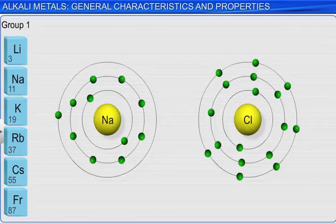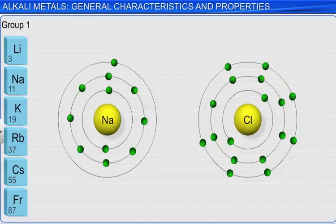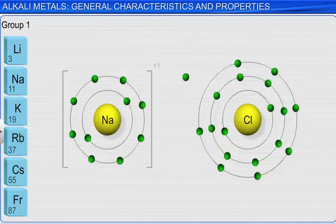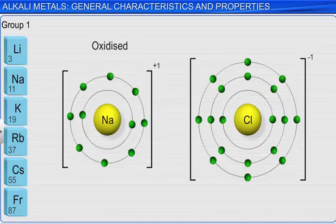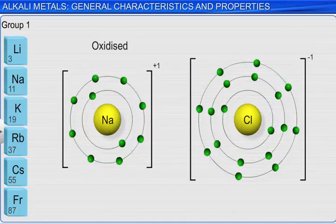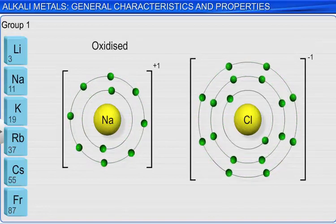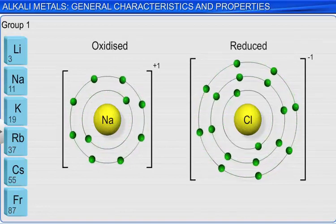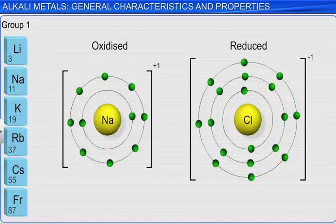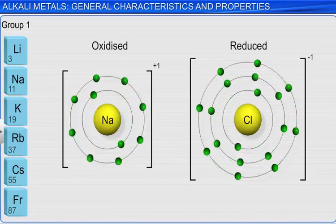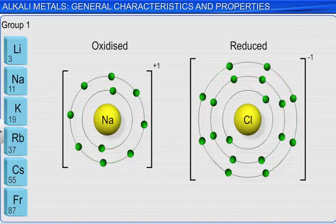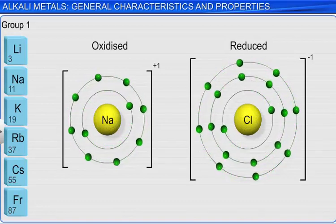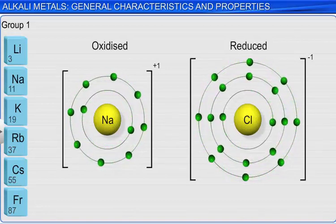Since the alkali metals have a high tendency to lose their valence electrons, they oxidize readily. When they oxidize, they cause some other substance to become reduced. And so, we can say that alkali metals are good reducing agents. Remember, the substance that is oxidized in a redox reaction is called the reducing agent.